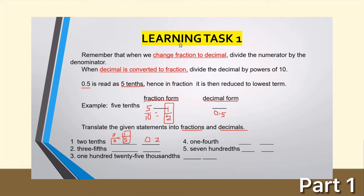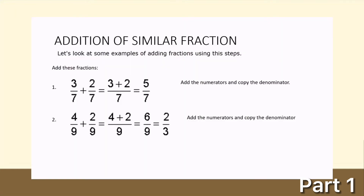You will have 2 points for each number. Now, how do we add similar fractions? Similar fractions are fractions with the same denominator. Take a look at this example: 3 over 7 plus 2 over 7. The denominators are the same — both are 7. All you have to do is add the numerators: 3 plus 2 equals 5, and just copy the denominator, 7. Therefore, your answer is 5 over 7.